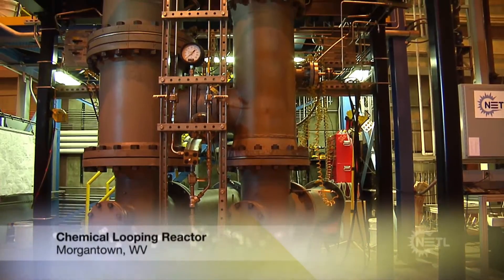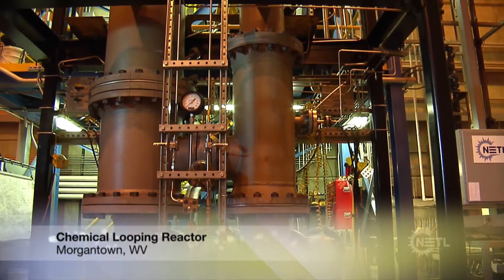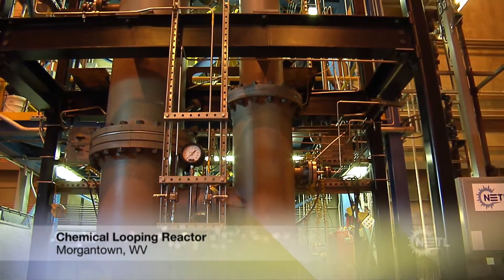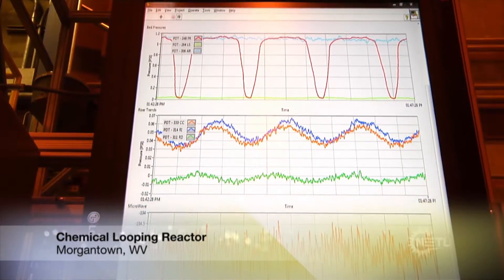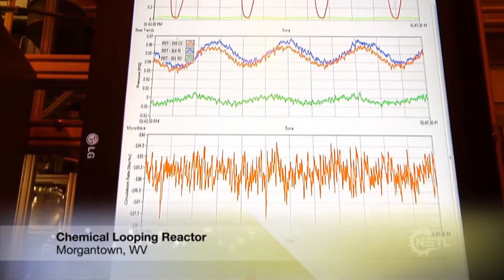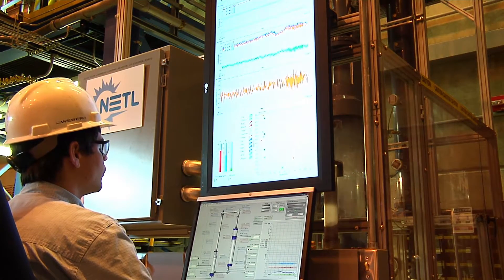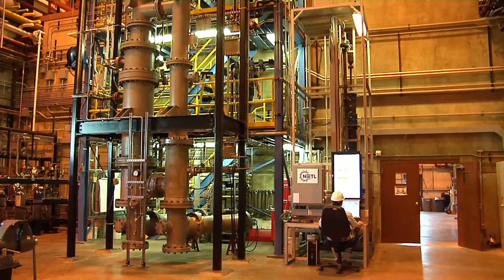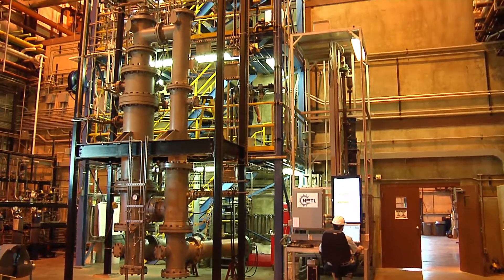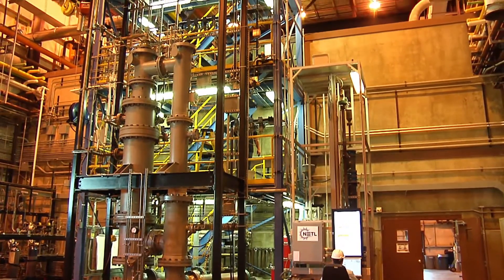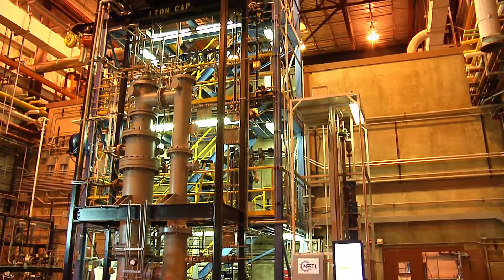NETL's chemical looping reactor unit is a high-temperature integrated CLC process with extensive instrumentation to improve computational simulations. A non-reacting test unit is also used to study solids flow at ambient temperature. The CLR unit circulates approximately 1,000 pounds per hour at temperatures around 1,800 degrees Fahrenheit.